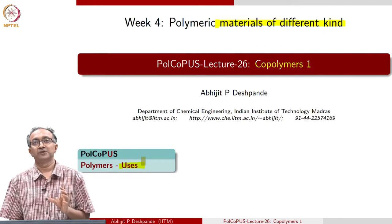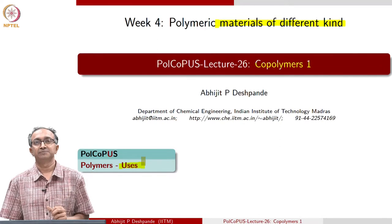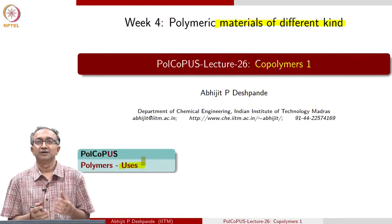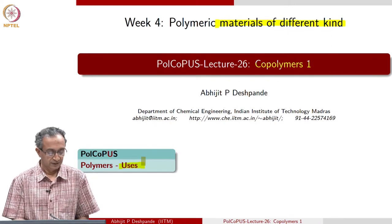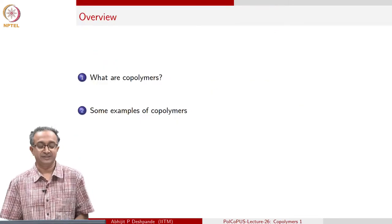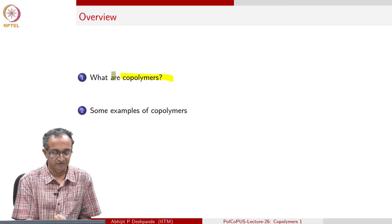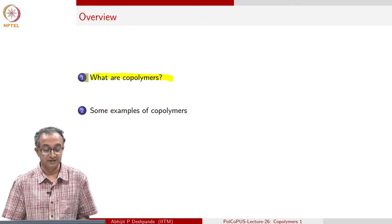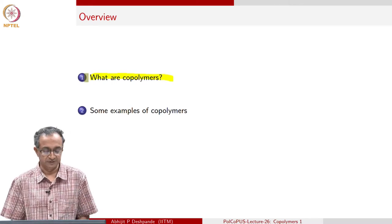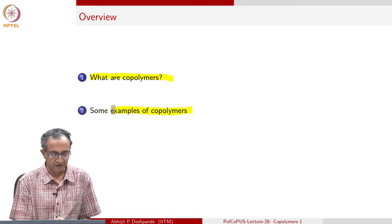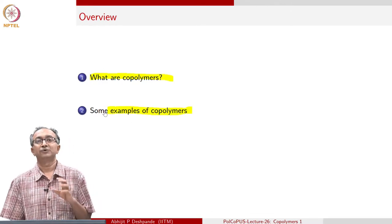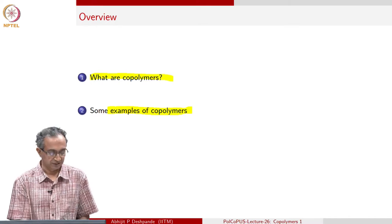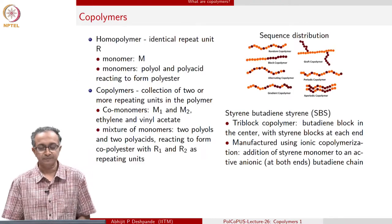In the next lecture on copolymers, we will also look at the properties of these copolymer systems and how they can be related to the properties of the homopolymers, which are already known. We will begin this lecture by quickly defining what copolymers are and the different types of copolymers which are present. And then we will finish this lecture by looking at two or three examples of these copolymer systems which are commercially used.